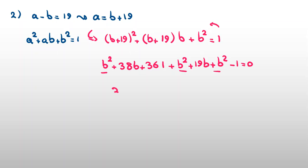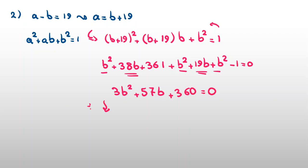Collecting like terms: 3b² plus 57b plus 360 equals 0. Dividing both sides by 3 gives b² plus 19b plus 120 equals 0.